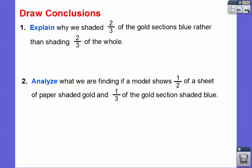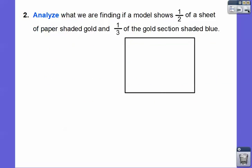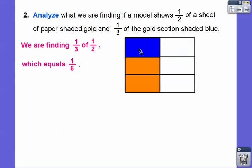So explain why we shaded 2/3 of the gold section blue rather than shading 2/3 of the whole section. Well, we were finding 2/3 of the 3/4 of ribbon — we weren't finding 2/3 of the whole, we were finding 2/3 of 3/4. Now analyze: what are we finding if a model shows 1/2 of a sheet of paper shaded gold and then 1/3 of that gold shaded blue? So let's shade half of this gold, then cut it into thirds and shade one of them blue. There is one of the six equal pieces shaded blue, so 1/3 of 1/2 equals 1/6.